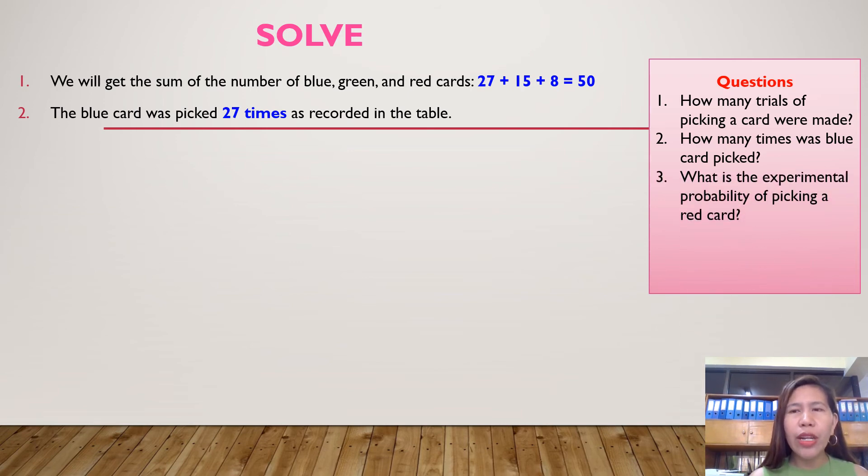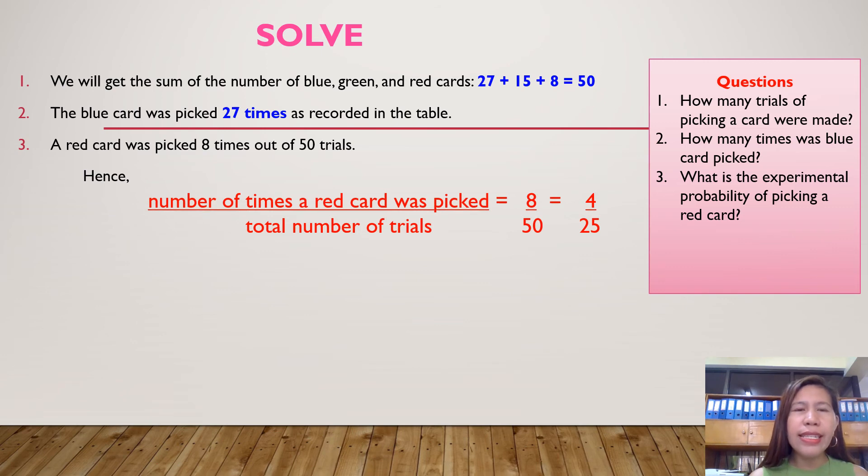For the third question, what is the experimental probability of picking a red card? A red card was picked 8 times out of 50 trials. Hence, our formula is, experimental probability is equal to the number of times a red card was picked over the total number of trials. This is equal to 8 over 50. Then, we are going to reduce 8 over 50 to its lowest term. We're going to divide it by 2. 8 divided by 2, the answer is 4. 50 divided by 2, the answer is 25. So, our experimental probability of picking a red card is 4 over 25.